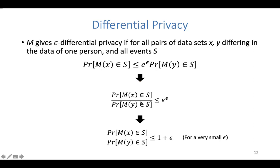You can rearrange the terms as a ratio between two probabilities bounded by e^epsilon. If epsilon is very small, the exponential term can be approximated as one plus epsilon. So if epsilon is zero the ratio is exactly one; if epsilon is 0.1, the ratio is bounded by approximately 1.1.